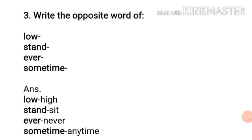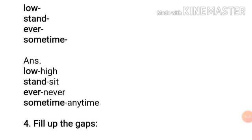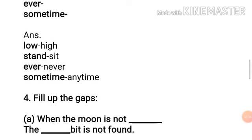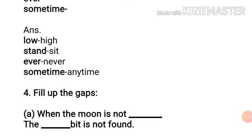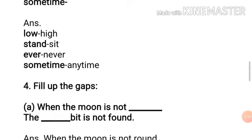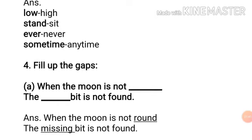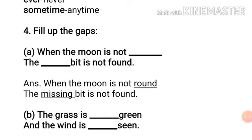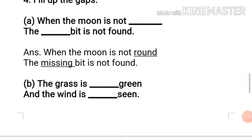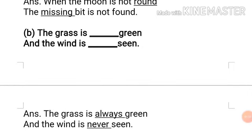Number four, fill up the gaps. Number A: When the moon is not - the - bit is not found. Answer: When the moon is not round, the missing bit is not found. Number B: The grass is - green and the wind is - seen. The grass is always green and the wind is never seen.